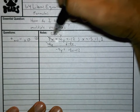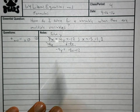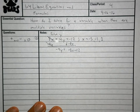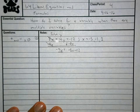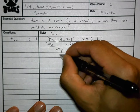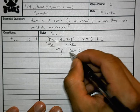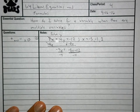We almost have the y by itself, but it's not by itself — there's still a negative 4 next to it. When there are numbers next to letters, it means it's multiplying. The opposite of multiplying is dividing. I don't want to just divide by 4; I also want to get rid of that negative. So I'm going to divide by negative 4. Whatever I do to one side, I do to the entire other side — divide by negative 4.